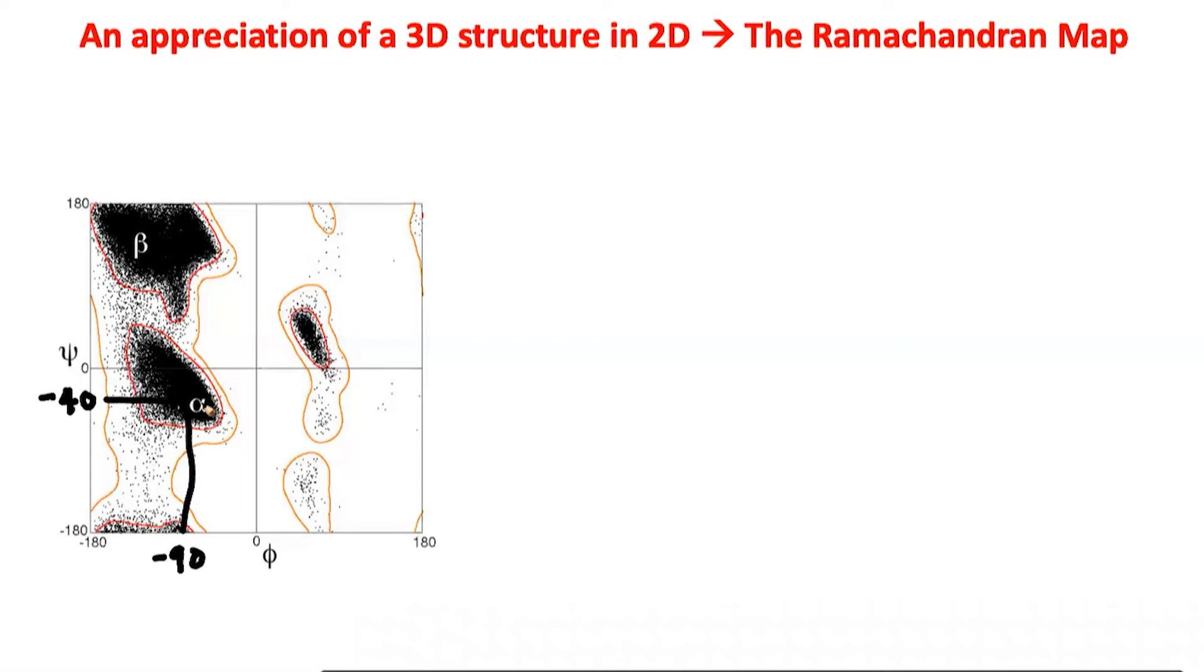If you had a psi of 160 and a phi of minus 90, it was pretty much in a structure in secondary structure which was a beta sheet. And there were very few dots on the right hand side of the grid, and this basically turned out to be a right-handed alpha helix. So it is an alpha helix which is not the same handedness as this alpha helix.